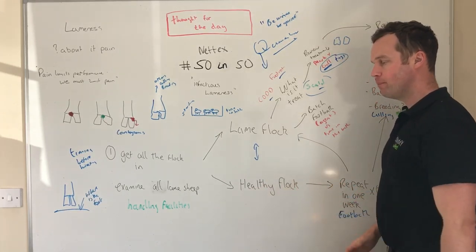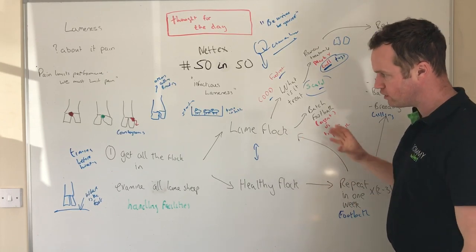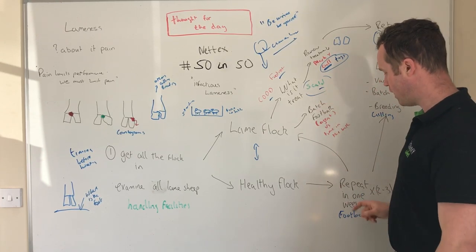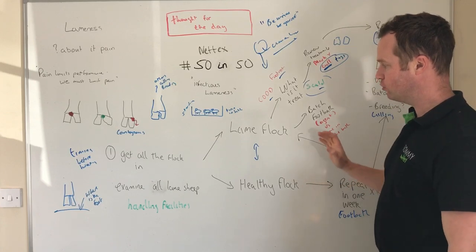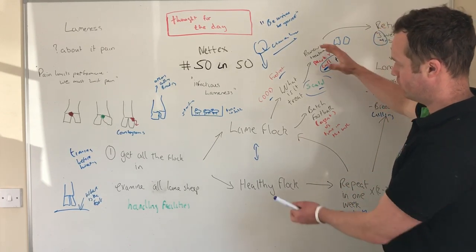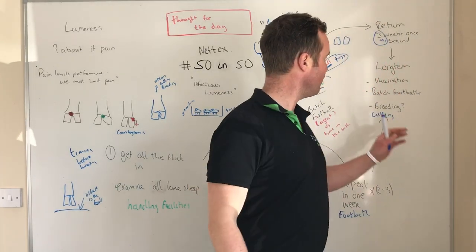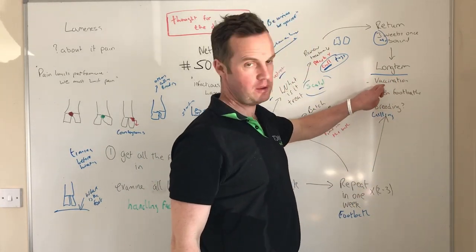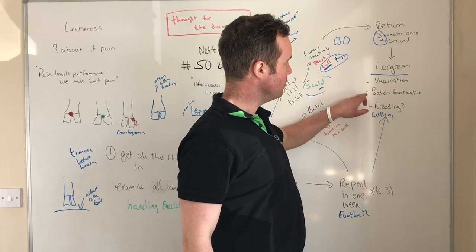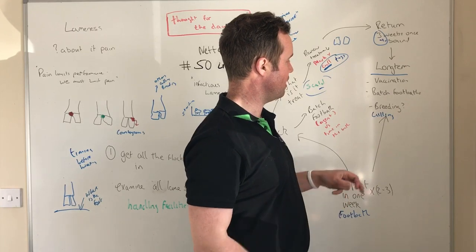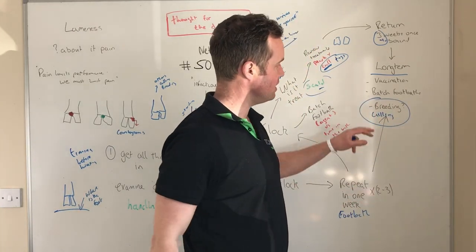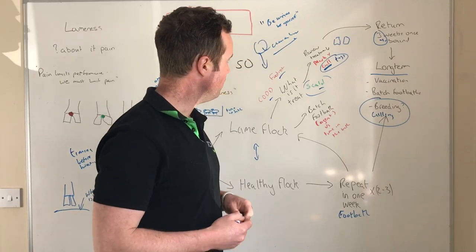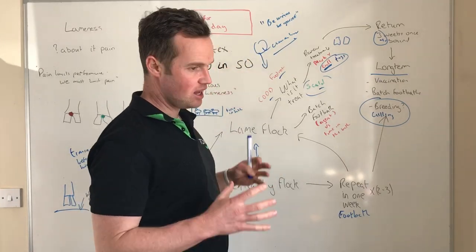With your healthy flock, while you're aggressively addressing the lameness, probably on a weekly basis pull out any new lame sheep to join the lame flock. At a minimum, foot bathe the healthy flock weekly until the two flocks are reunited. For the long-term plan, vaccination works extremely well for foot rot. Continue regular foot bathing to reduce infection pressure, cull bad feet, make good breeding decisions, and maintain quarantine for any bought-in stock.